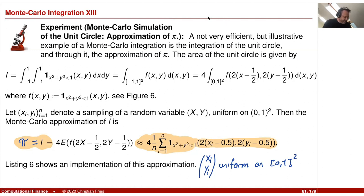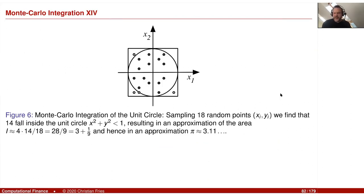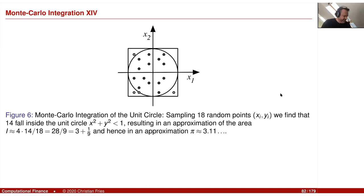The idea behind this was also in the script. If you sample random points in the unit hypercube, the probability to be inside the circle is the ratio of the area of the circle with respect to the area of the unit hypercube. We do the transformation to just the upper sector, the quarter from 0 to 1, and then we get four times this integral, which gives us π.